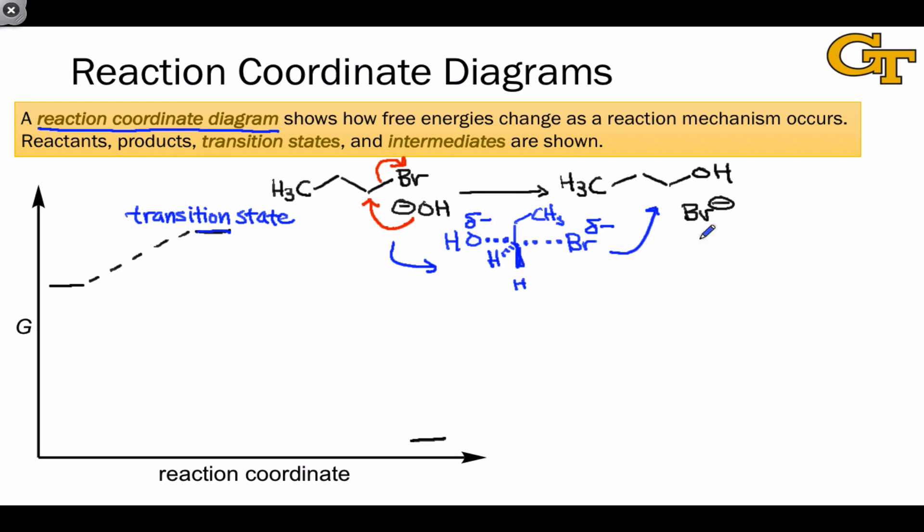As the transition state converts to the product, the energy of the entire molecular assembly decreases. The difference in energy between the reactants and the transition state is referred to as the activation energy. And in organic chemistry, you often see this represented as delta G double dagger, where the double dagger refers to the transition state.